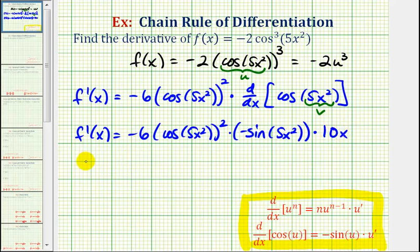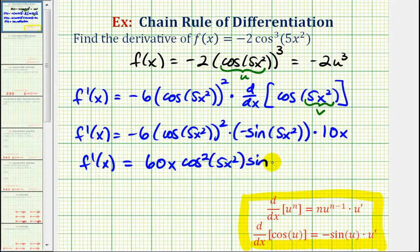Now we need to clean this up, so we have f prime of x equals negative six times 10x, this is negative 60x, but we have a negative here, so it's positive 60x, and we have two factors of cosine five x squared, so we'll write this as cosine squared, five x squared, one factor of sine five x squared.